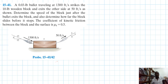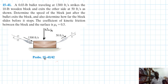So we have the weight of the wooden block, which we'll call WB. We also have the normal force and the kinetic friction acting on the block, as shown in the free body diagram.